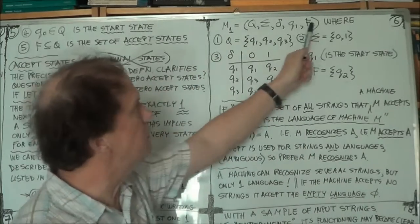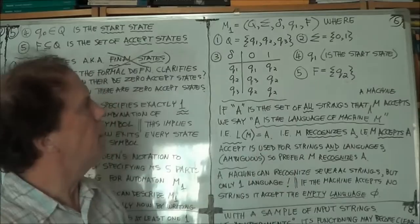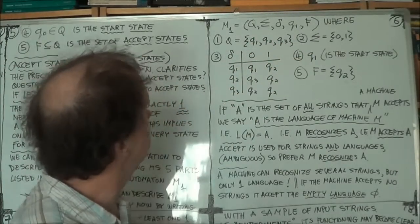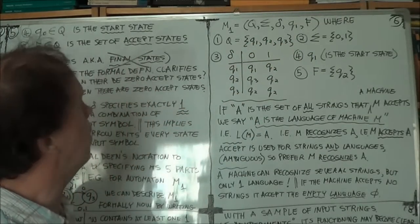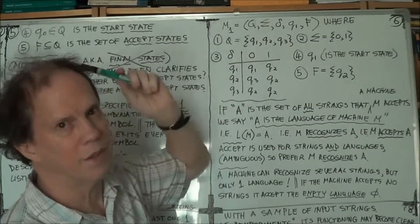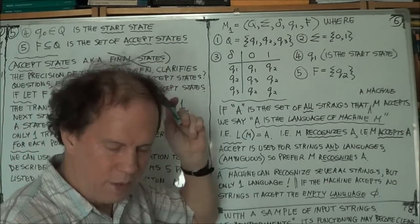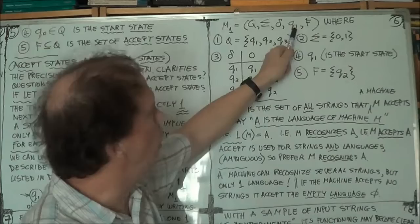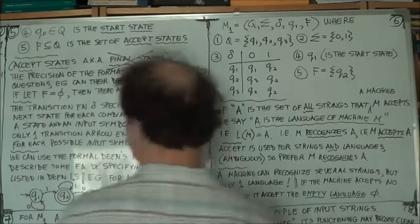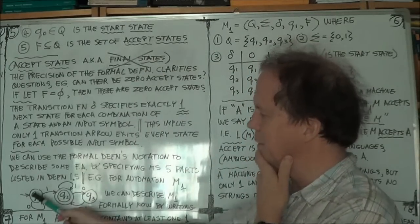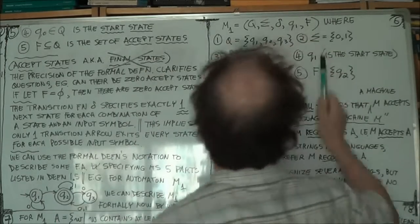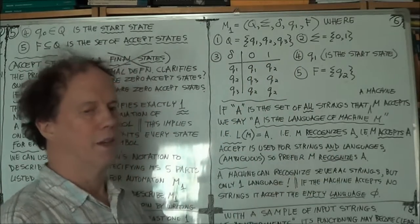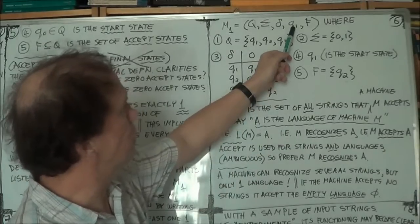So here it is. Here's M1 written now as a 5-tuple with a formal definition. Q, sigma, delta, Q naught. Oh that's interesting. So yeah, our Q naught, remember in the formal definition, the Q naught represented the start state, just one state. Well in our case for M1, Q naught is Q1. Remember in our automaton M1, we have three states and the start state is Q1. So the start state goes here. So your Q naught, that was the generic start state if you like, becomes Q1. So that's why it's Q1 here.